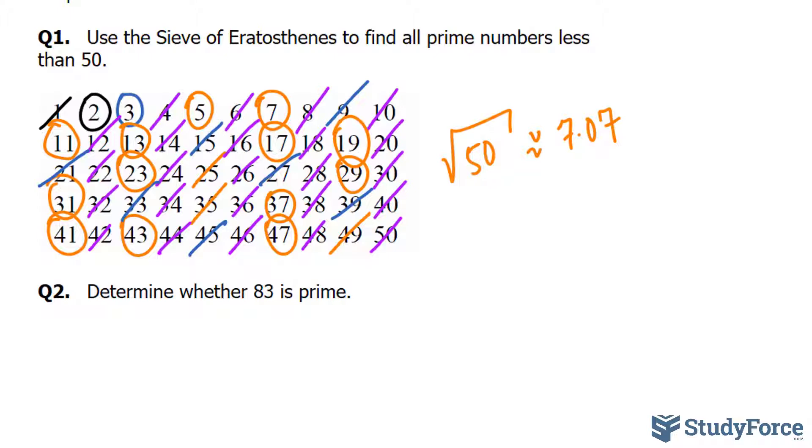To do this quickly and effectively, check if any of the first prime numbers divide into 83: 2, 3, 5, and 7. None of these divide into 83, so we can assume 83 is prime.